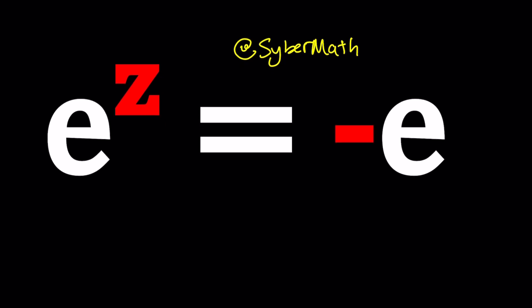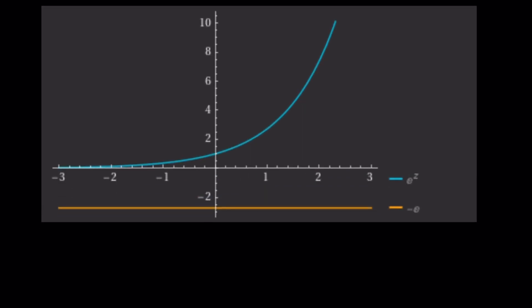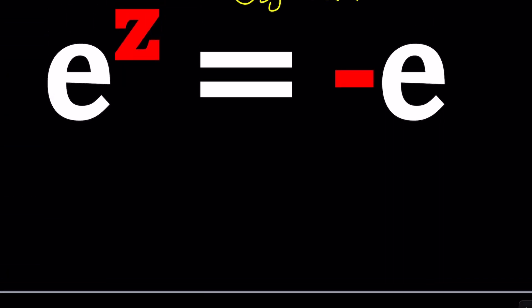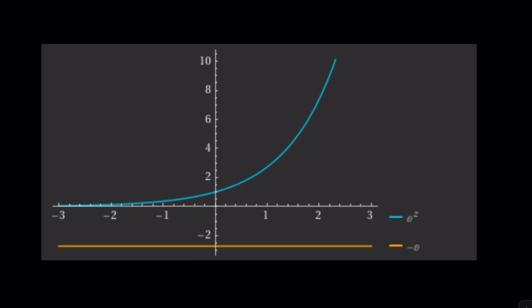Anyway, so we have this scenario where e to the z equals negative e and we're going to solve for z. How do we solve for something like this? First of all, when I graph these two things in the real world, there's no intersection point. Obviously, there's no real number that makes this possible. Why? Because e to the power z cannot be less than 0 and negative e is less than 0. So this is not going to happen in the real world. So we have to go to a different world which is called the complex world. Let's go ahead and solve this problem in the complex world.